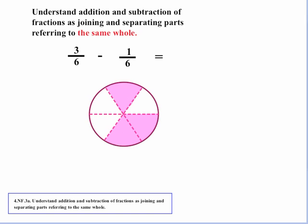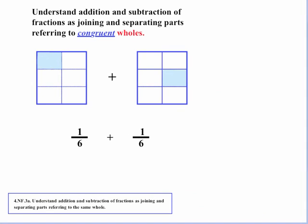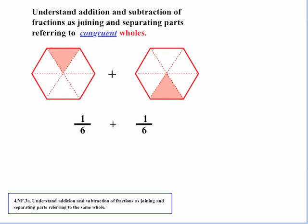The standard talks about the same whole, but it's important to realize we can also be talking about congruent wholes. As long as I know that this rectangular figure and this rectangular figure are congruent, then I can combine these equal-sized parts — this 1/6 with this 1/6. Same situation with two hexagons: as long as they're congruent and the parts are divided equally the same way, then I can combine this 1/6 with this 1/6.